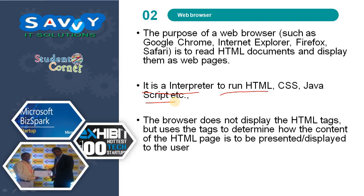This is the exact definition of the web browser. People think that it educates HTML pages but it is an interpreter — executing it. The purpose of a web browser is to read HTML documents and display them as web pages. Web browsers include Google Chrome, Internet Explorer, Mozilla Firefox, Safari, UC Browser, etc. The web browser does not display the HTML tags but uses the tags to determine how the content of the HTML page is to be presented or displayed to the user.